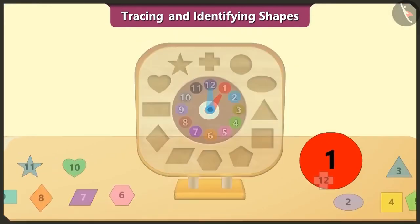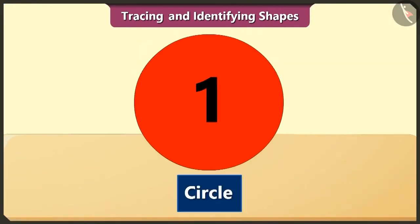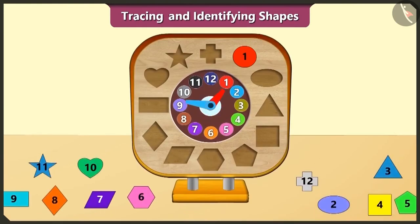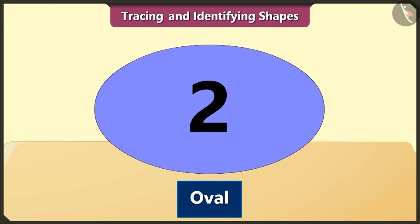Here, the circle is first in order. The oval is second in order. This shape is like an elongated circle. It is also called ellipse.